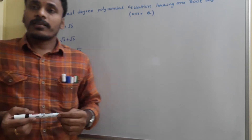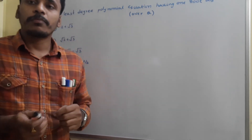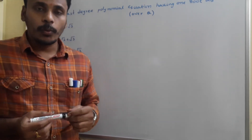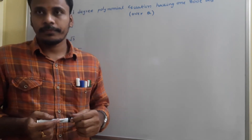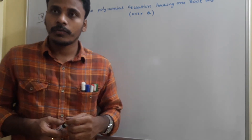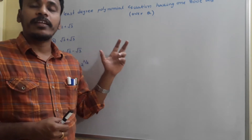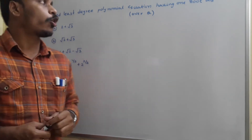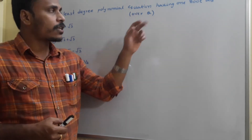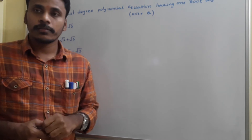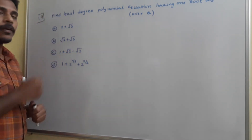In last class, we discussed about writing polynomials and polynomial equations if roots or zeros are given. And now, see, look at the board — we need to find the least degree polynomial equation over rational numbers, and one root is given.